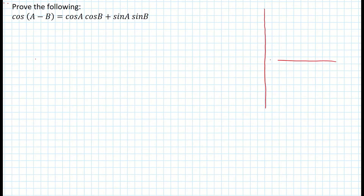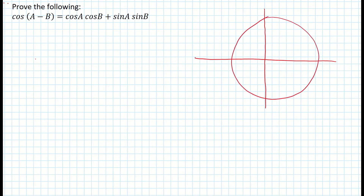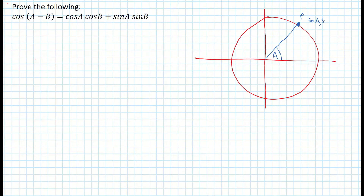Just do a little bit of revision on our unit circle. It's a circle with a radius of 1. I'm going to draw a radius line coming from the center out to the edge of the circle and label that point P. The angle that's created I'm going to label as A. Now that coordinate P, we can call it XY, but for trigonometry we are going to call it the point (cos A, sin A).